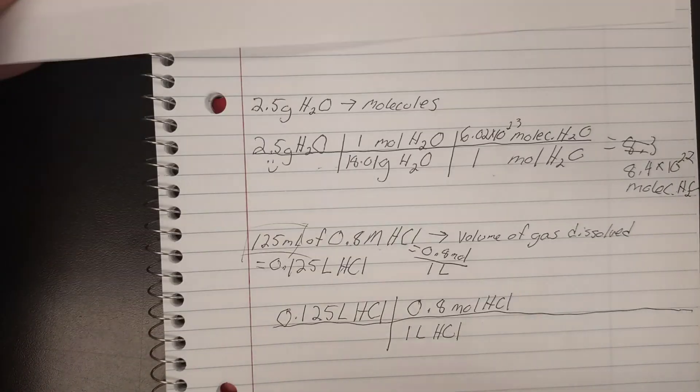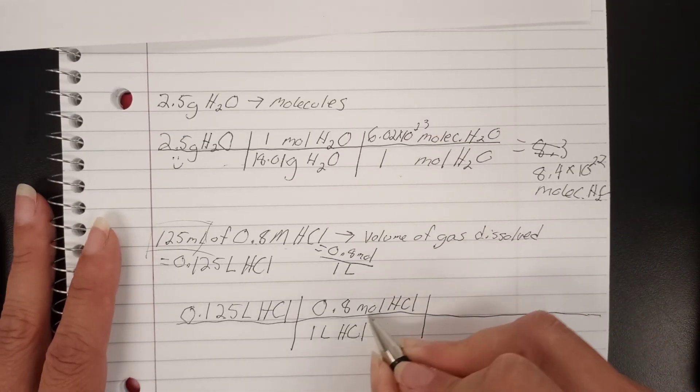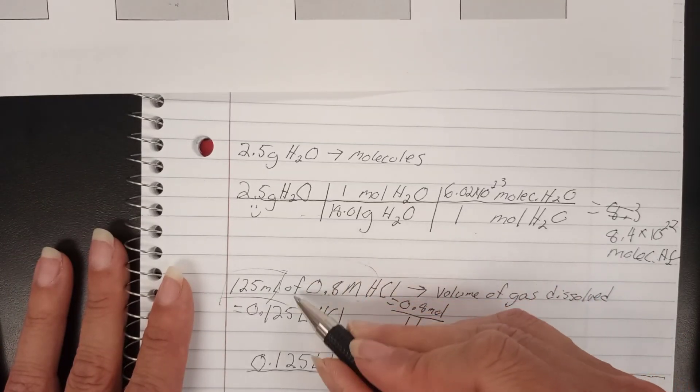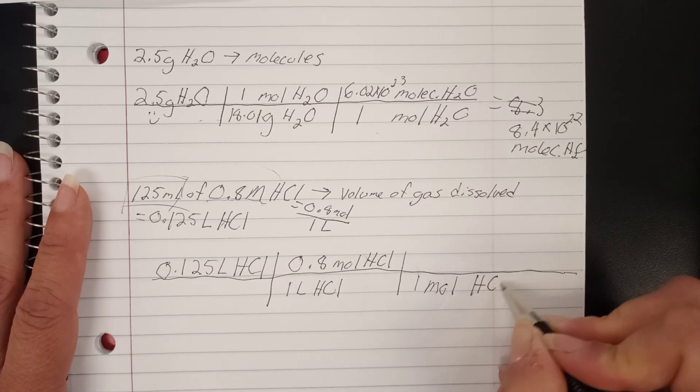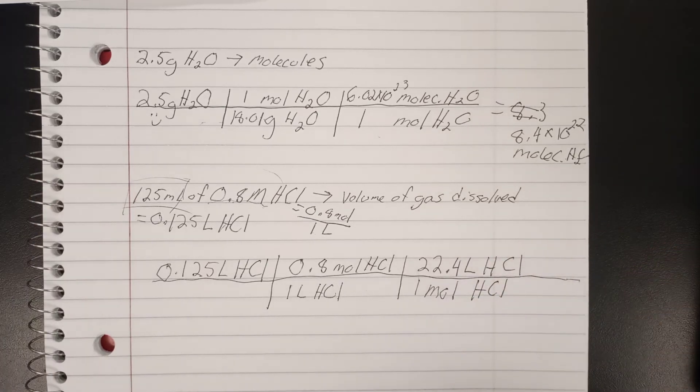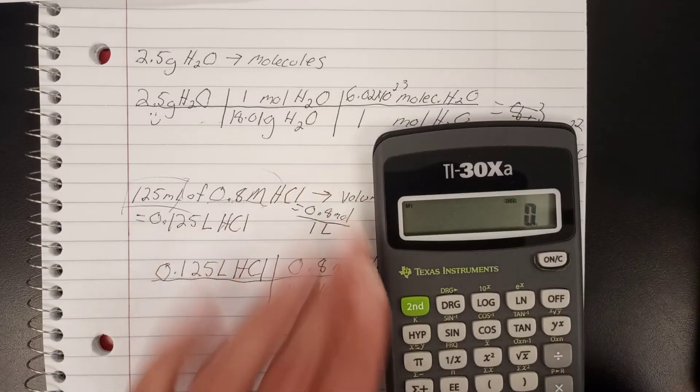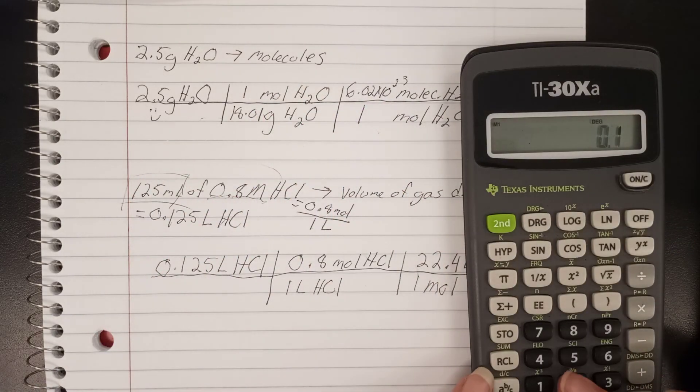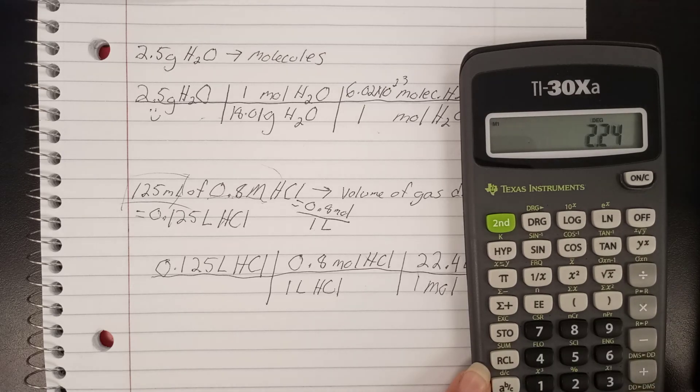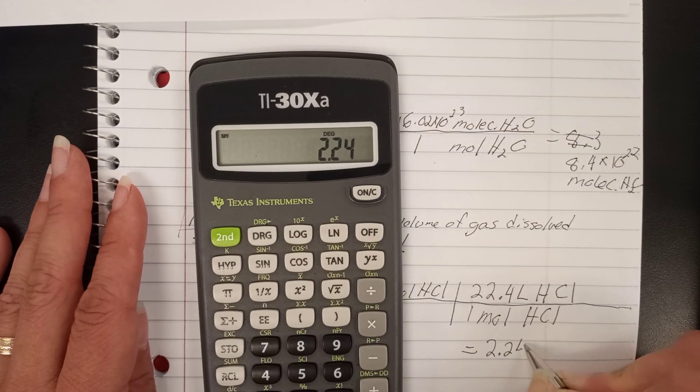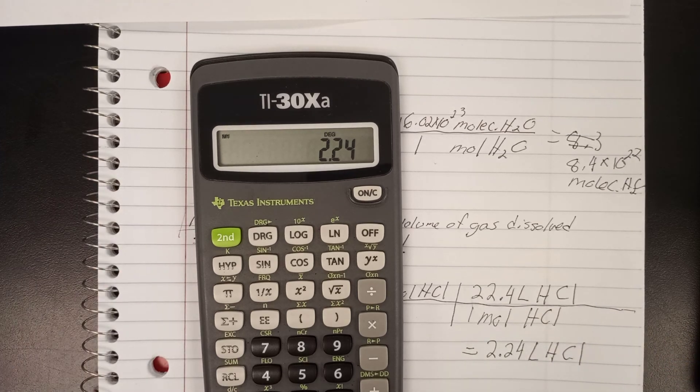That gets us from our volume to our moles, and now I want to go from our moles to the volume of the gas. So moles go here, moles go here. It's one this time. The only time it's not a one is when you're working with the molarity, and the molarity is simply going to be in the question. You never have to figure that out for yourself. So we have one mole HCl equals 22.4 liters of the gas HCl. Clear that out, go 0.125 times 0.8 times that 22.4 equals 2.24 liters HCl.